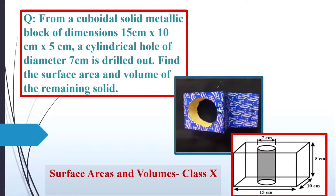Hello everyone. We are doing a very good question from the chapter of surface area and volumes for Class 10. From a cuboidal solid metallic block of dimensions 15 cm by 10 cm by 5 cm, a cylindrical hole of diameter 7 cm is drilled out. Find the surface area and the volume of the remaining solid.